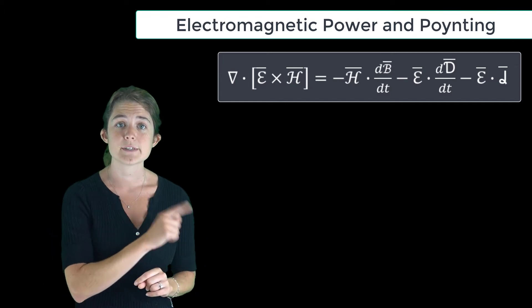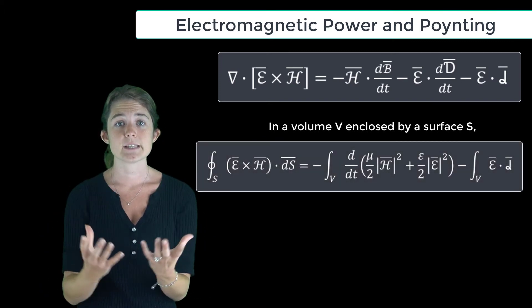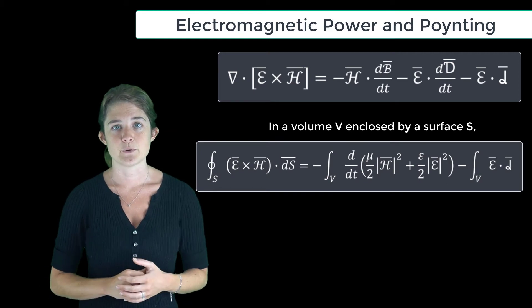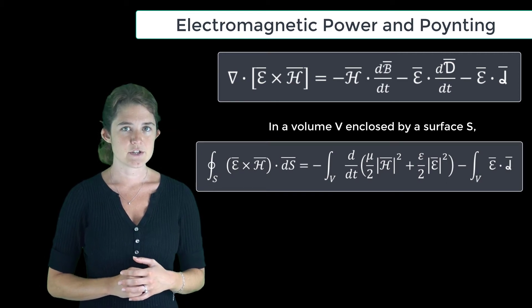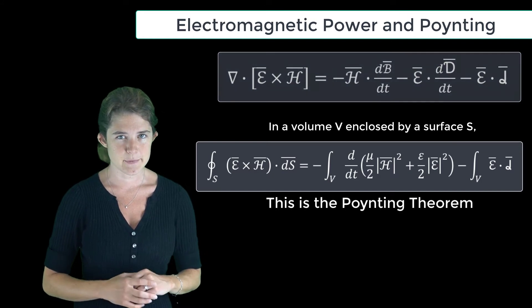We can then apply the divergence theorem to both sides of this equation to show that in a volume V surrounded by surface S, this relationship holds true.